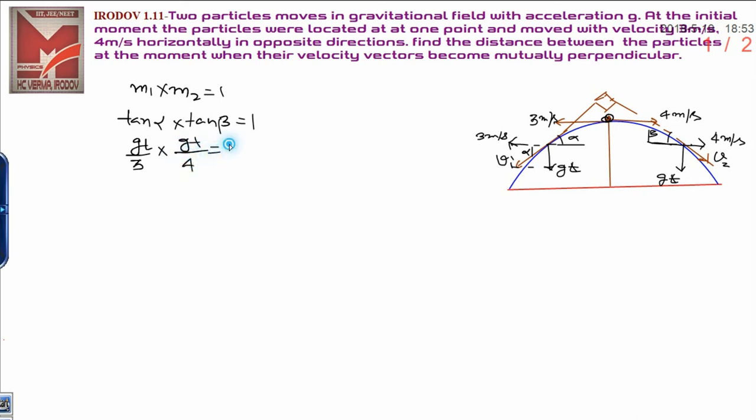From this relation, we can get the value of gt. Here you can calculate gt will be root 0.12 when you solve it.